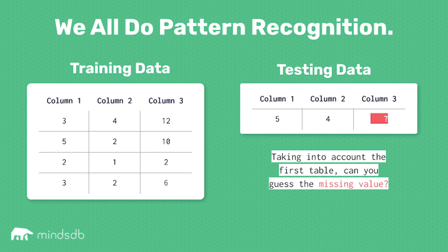First we need to talk about data. You see here we have basically a CSV with a bunch of data. We have column one and column two, and if you're a bit perceptive you'll notice that column three is a simple multiplication operation between column one and column two.